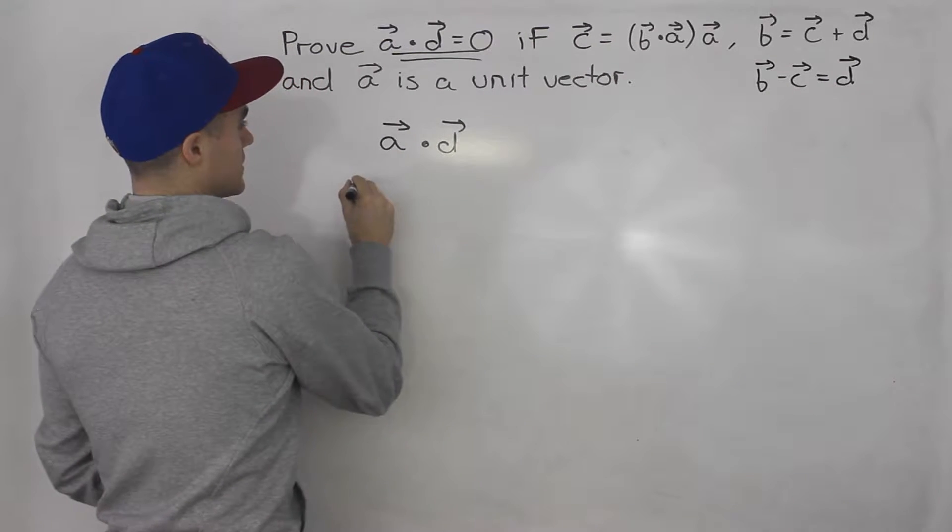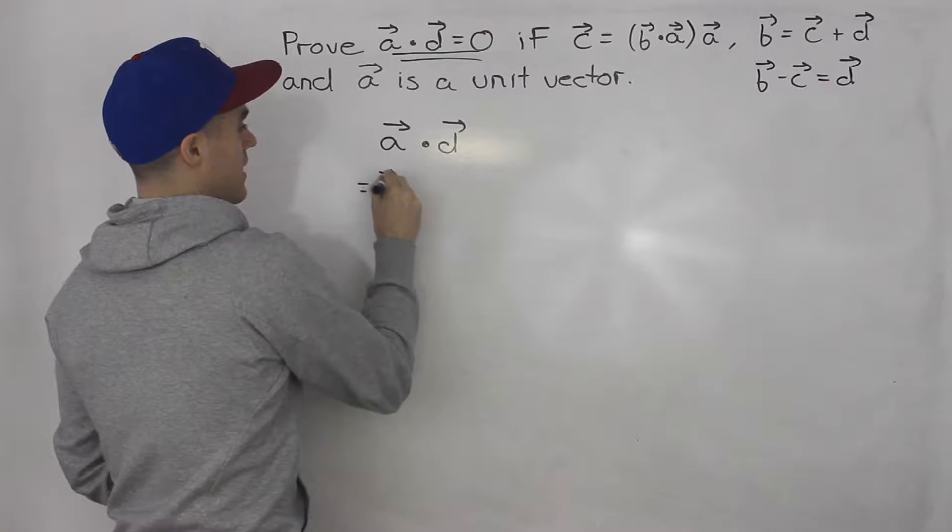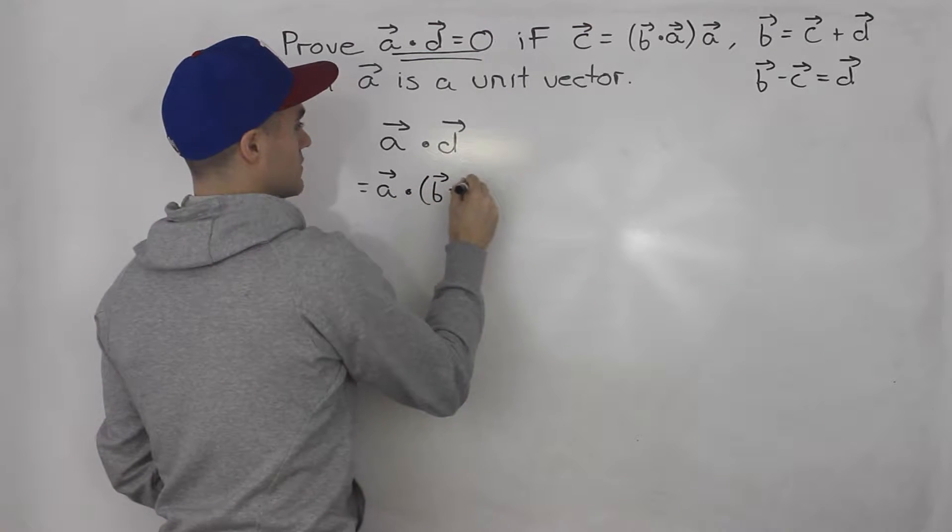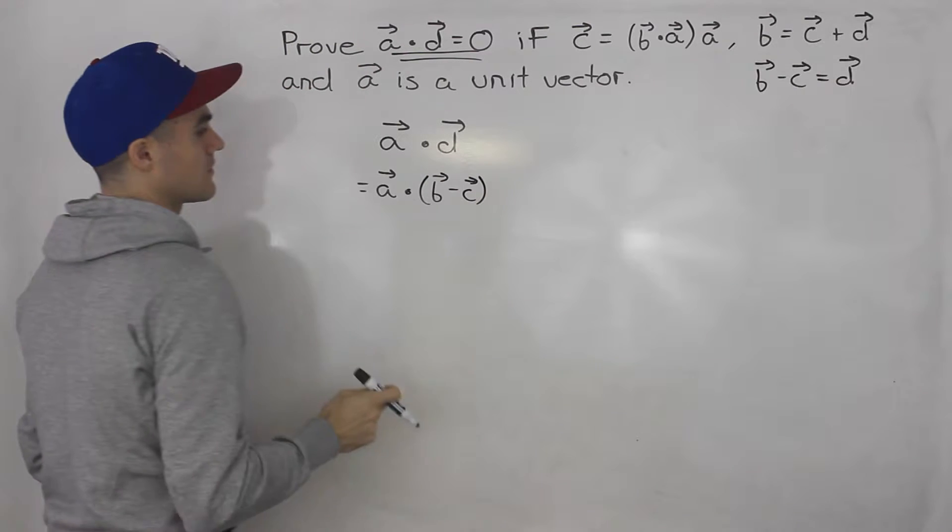So we can say that vector b minus vector c is equal to vector d. So we can say that this is equal to a dot, in brackets, vector b minus vector c. This is just vector d there.